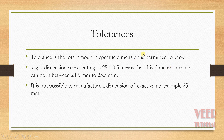For example, we want to manufacture anything of dimension 25, but in general it is not possible to manufacture a dimension of exact value. So a dimension represented as 25 plus minus 0.5 means that this dimension value can be in between 24.5 to 25.5. So tolerance is the value between this permitted limit — the minimum permitted limit in this example is 24.5 and the maximum is 25.5.